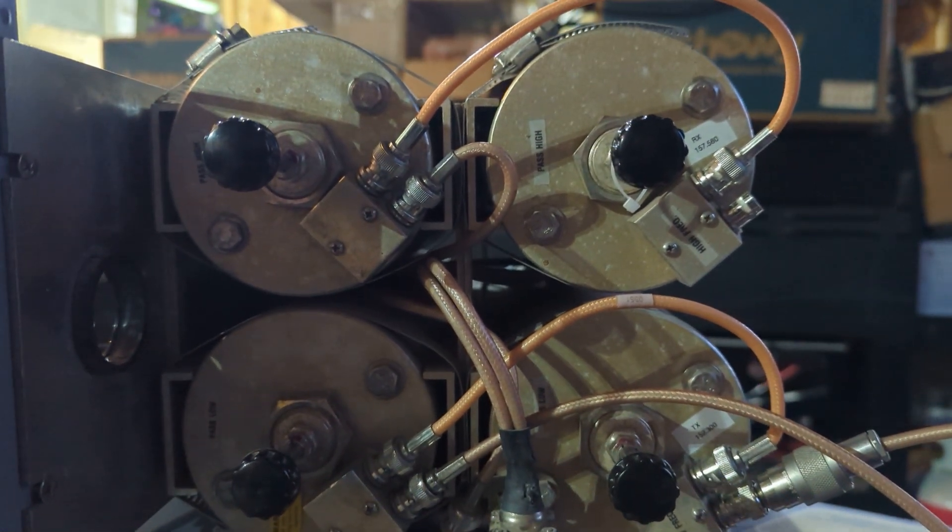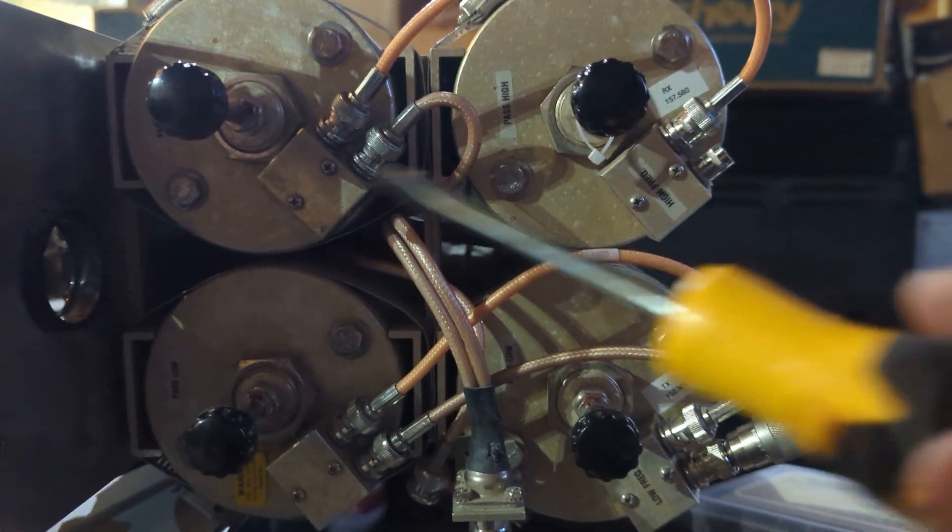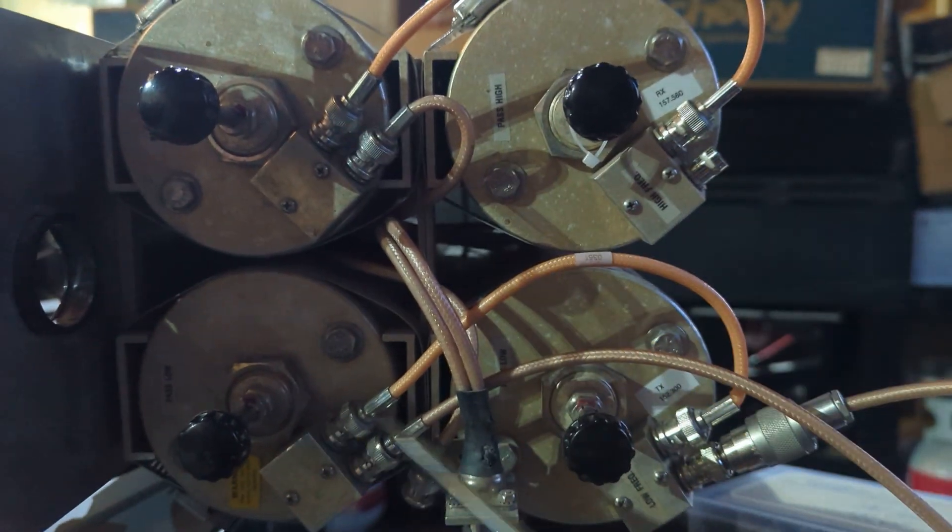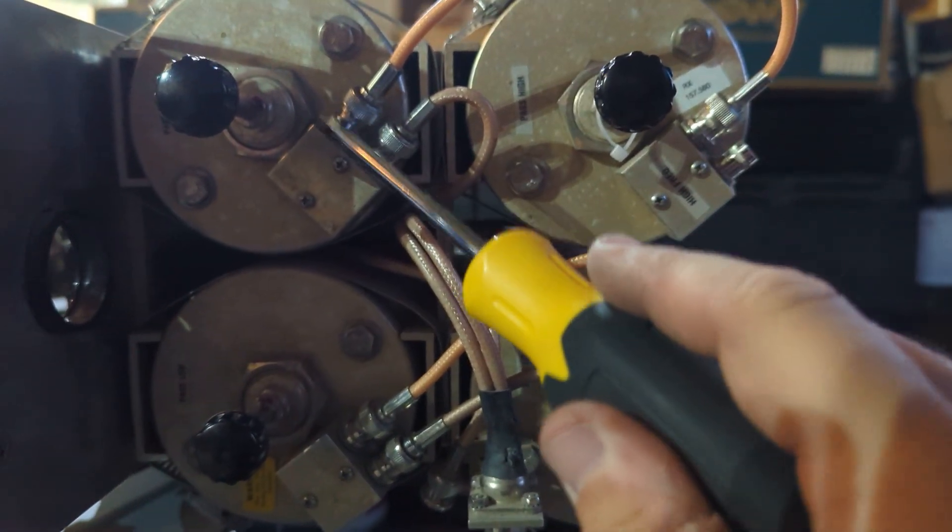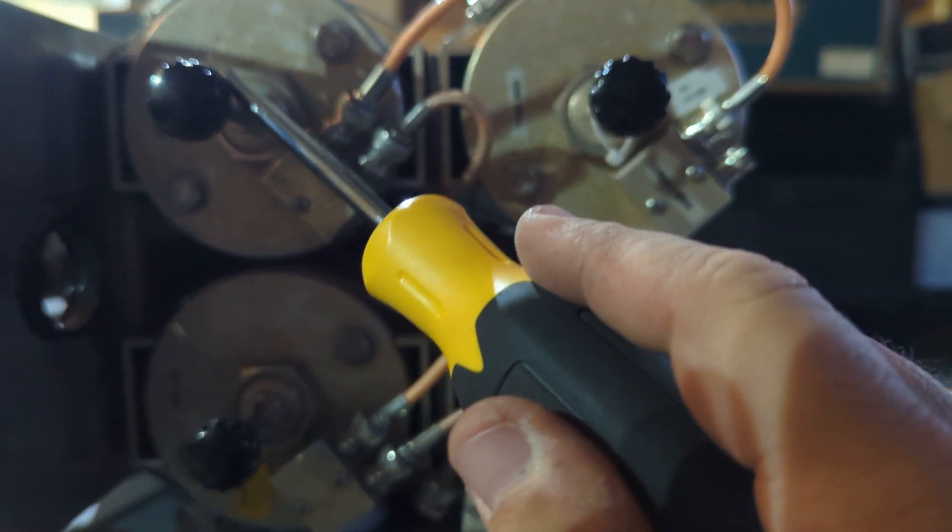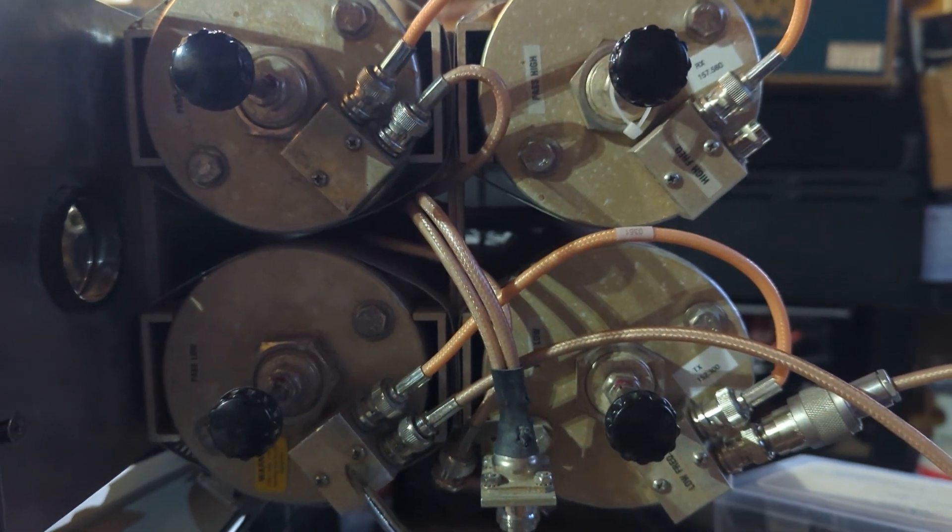But when we're talking about a duplexer in this case, we have two parts to this duplexer. We have a receive side and transmit side. But per each individual one, we have a band pass and then we have a notch.